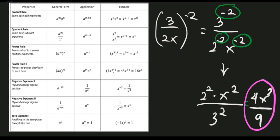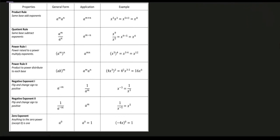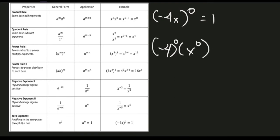Our last property is the zero exponent. Anything raised to the zero power, except zero itself, equals 1. So any expression or base raised to zero always equals 1. For example, the quantity negative 4x raised to zero equals 1. Distributing: negative 4 raised to zero is 1, times x raised to zero, which is also 1, giving 1 times 1, which simply equals 1.